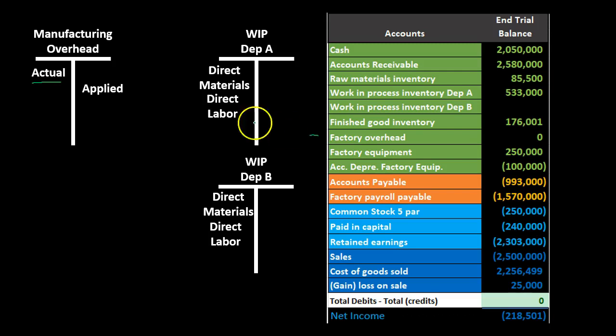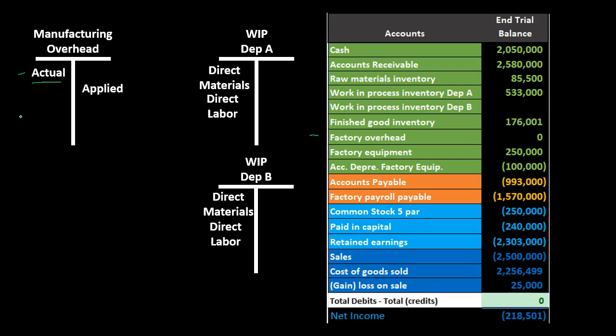In journal entries, items going into manufacturing overhead are debits — for factory utilities (credit utilities payable), supervisor salaries spanning both departments (credit payroll for indirect items), and indirect materials going to both A and B (credit raw materials). These are factory-related costs that are part of inventory but can't be assigned to a particular department directly.